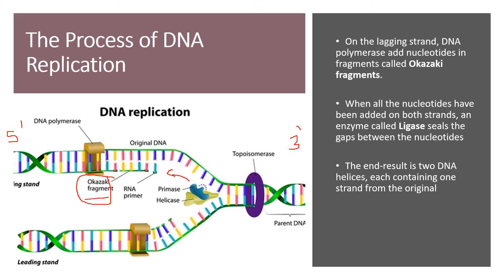Once all of the nucleotides have been added and DNA polymerase has worked on both strands, a new enzyme called ligase will come and seal the gaps. Remember that we started with RNA primers — once all the rest of the DNA has been copied, the RNA primers are removed and replaced with DNA. Ligase then ensures there are no gaps between the DNA strand, sealing all of them.